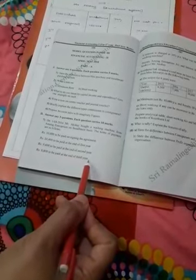Rs. 10,400 to be paid at the end of the 1st year. Rs. 9,600 to be paid at the end of the 2nd year. Rs. 8,800 to be paid at the end of the 3rd year.